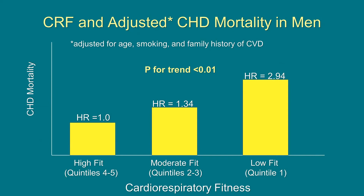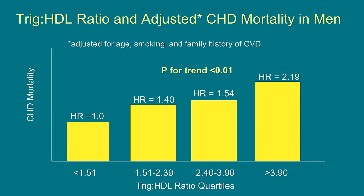In this slide, we look at cardiorespiratory fitness level on the x-axis and risk of dying from coronary heart disease on the y-axis. Using the highly fit men as a referent — those scoring in the 4th and 5th quintile — we see that moderately fit men had a hazard ratio of 1.34 and low fit men a hazard ratio of nearly 3. The P for trend was highly significant. We did a similar analysis for triglyceride-to-HDL ratio, dividing men into quartiles, and saw a correspondingly higher rate of mortality as triglyceride-to-HDL ratio quartile increased. The P for trend was also significant.